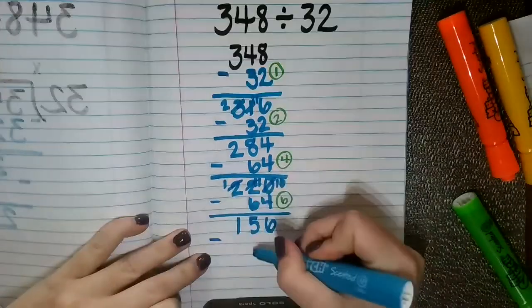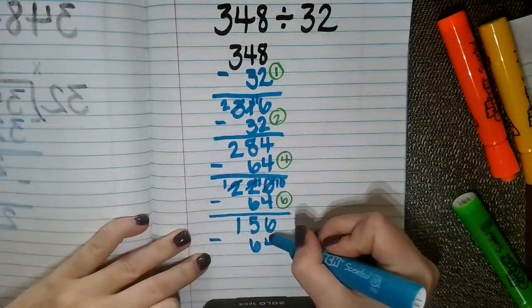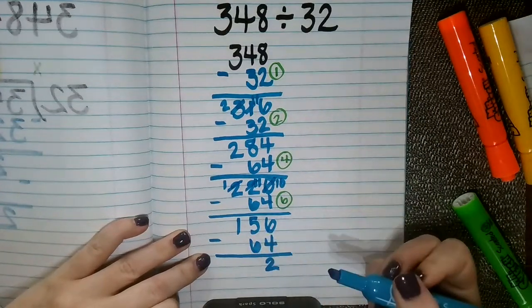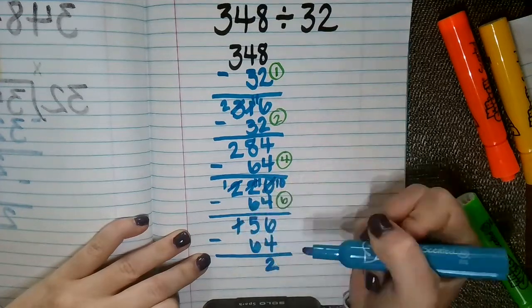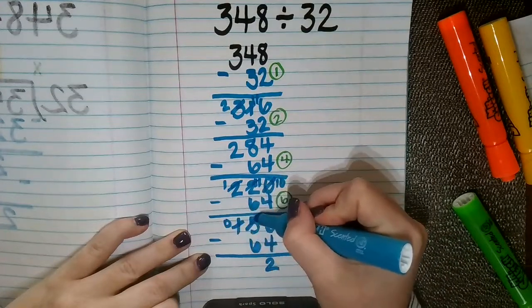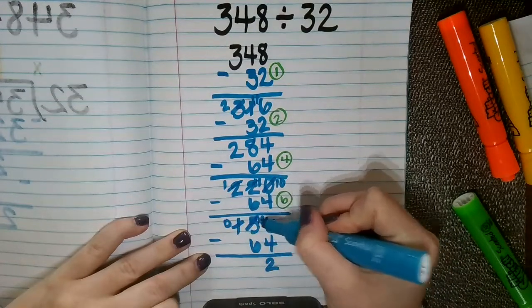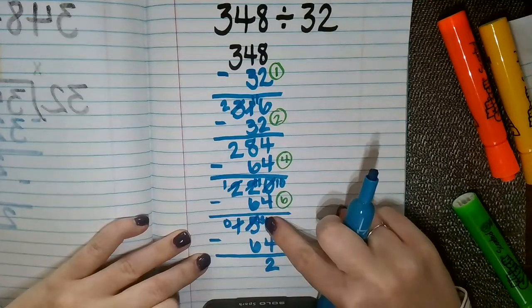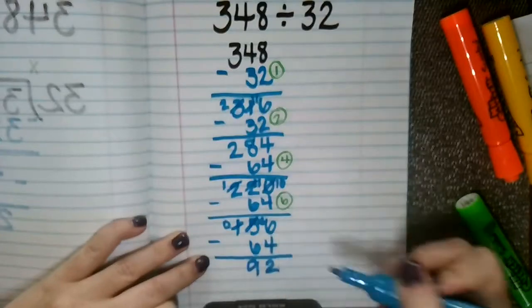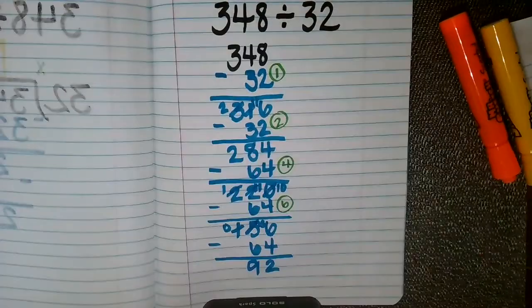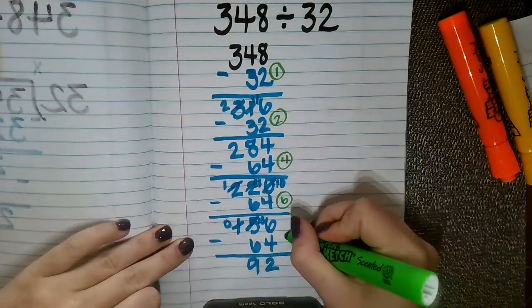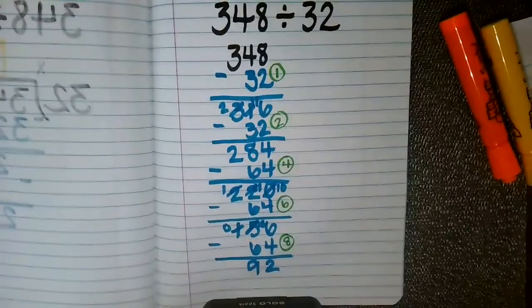I'm going to subtract another 2 groups of 32. 6 minus 4 is 2. 5 minus 6 I cannot do. I'm going to go borrow from my next largest place value, making that a 0 and giving that to my tens place to make this a 15. 15 minus 6 is going to be 9. And now I still can take more groups of 32 away from 92, but so far I have taken 8 groups of 32 away.